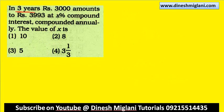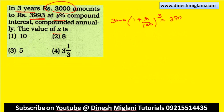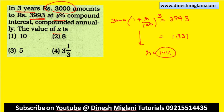In 3 years Rs. 3,000 amounts to 3,993 at x% rate of compound interest. Find x. So 3000 into (1 + r by 100) raised to power 3 = 3993. Solving: (1 + r/100)^3 = 1.331. Since 1.1 cubed = 1.331, R equals 10%. Hence first one is my answer — x is equal to 10%.